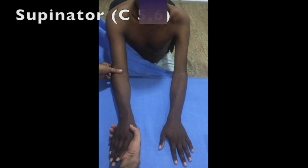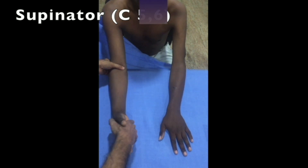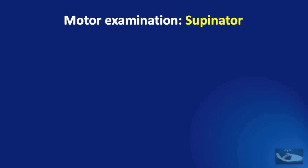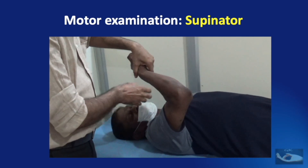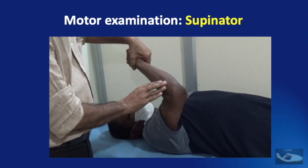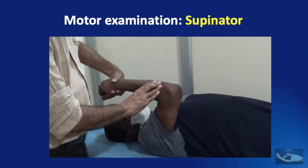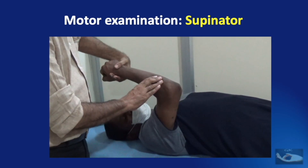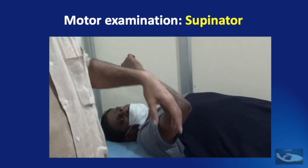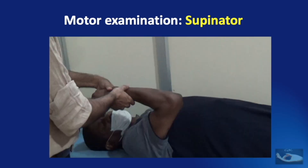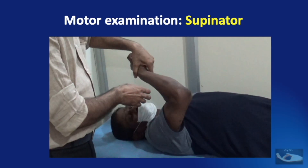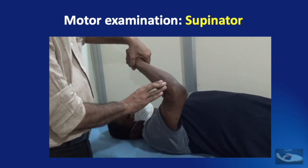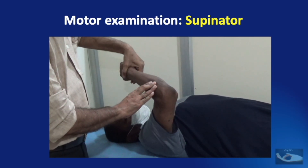When testing the supinator, we must remember that the biceps must be kept elongated — that is, the elbow must be kept extended — and the patient is asked to forcefully supinate the forearm against resistance. An alternative method is to make the patient lie supine, shoulder flexed to 90 degrees, elbow flexed maximally, and forearm in mid-prone position, then ask the patient to supinate against resistance. In this position, the action of the biceps is negated. The supinator muscle can be palpated on the radial side of the proximal third of the forearm, just radial to the palpable subcutaneous border of the ulna.